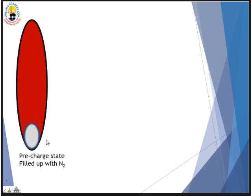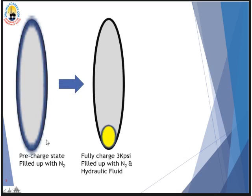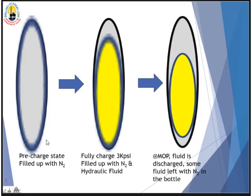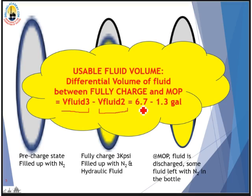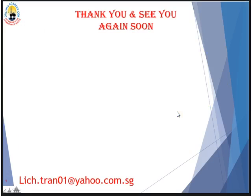So from the first state — pre-charge fully filled with nitrogen — to the second state fully charged to system working pressure, to the third state after the drawdown test, we work out the usable fluid volume. It is defined as the differential volume of fluid between the fully charged state and the minimum operating pressure state. We take V_fluid at state two minus V_fluid at state three: 6.7 minus 1.3 equals 5.4 gallons. That is the usable volume of hydraulic fluid for this one bottle.